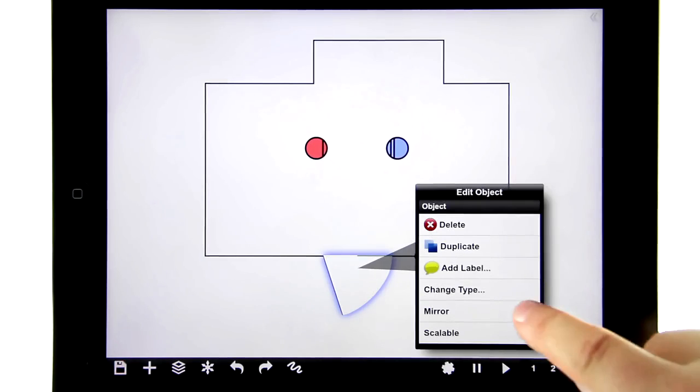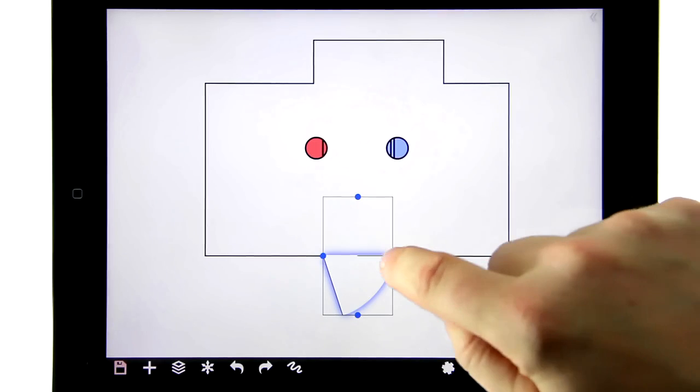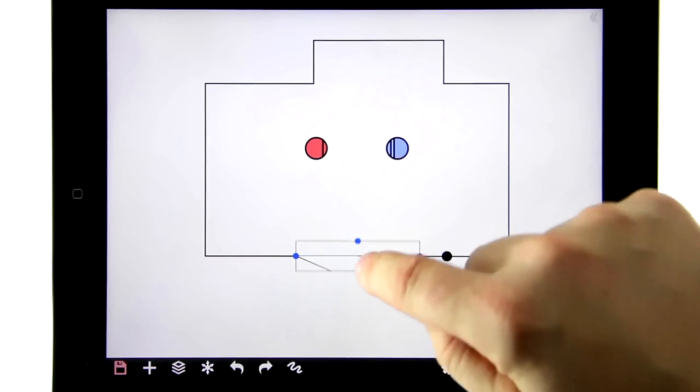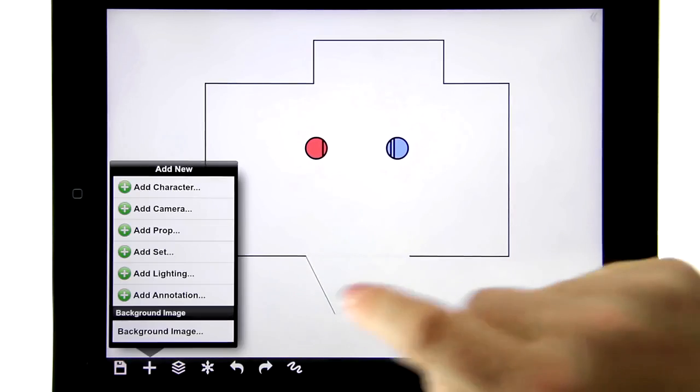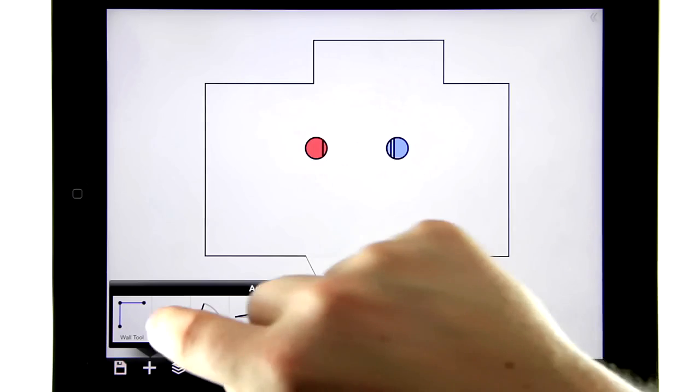I also have a mirror setting here, and then we have a function called scalable, which is a scaling handle for making things smaller and bigger. Let's add a window.